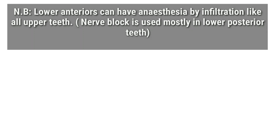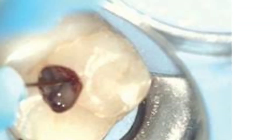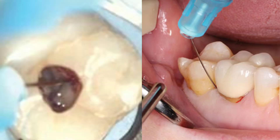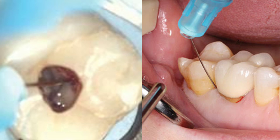Other anesthetic techniques such as intrapalpal or intraligamentary techniques are very useful during restorative procedures, especially endodontics. They eliminate a big portion of pain from an acutely inflamed pulp. They must be used after using infiltration or nerve block techniques, depending on whether the tooth is upper or lower.